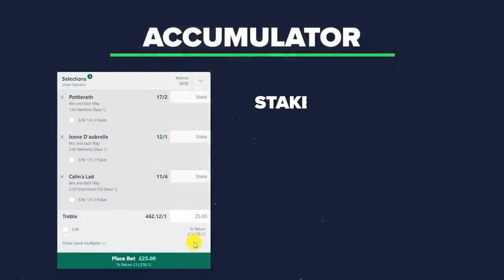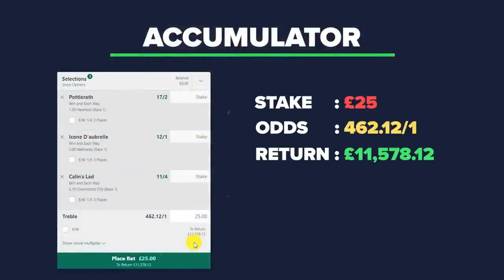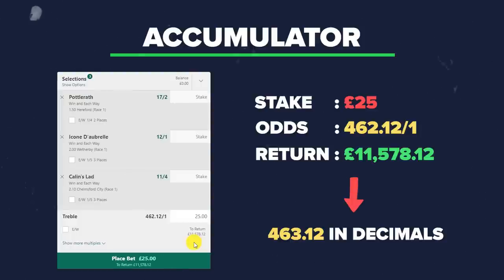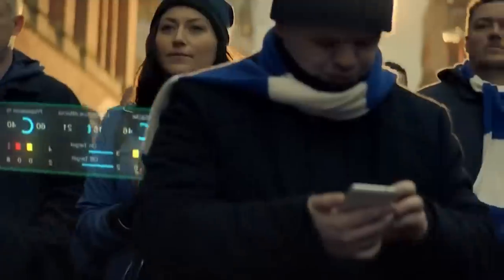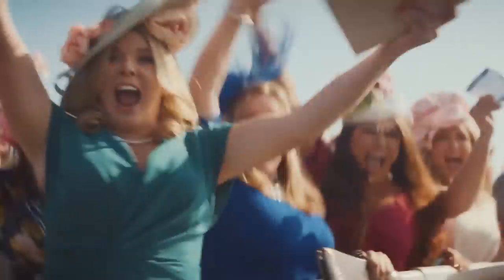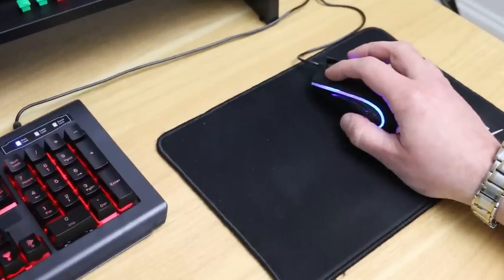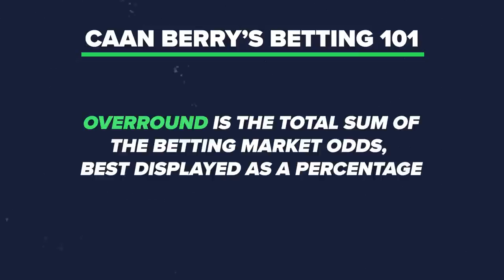The odds for that treble on Bet365 are 462.12 to 1 in fractional odds. You can change that to decimal odds under your account section. Now, there's no secret here — bookmakers and sportsbooks include their margin baked into the betting odds before you even place the bet. To give this some context, there is an over-round figure, meaning the combined price of all betting odds in that particular market.